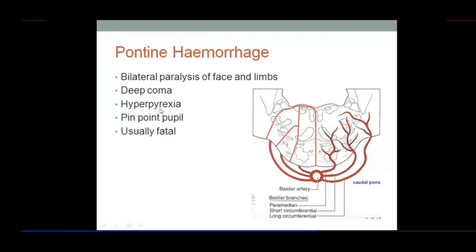Another feature is hyperpyrexia. There are temperature-regulating fibers descending from the hypothalamus. If these are cut or injured at the level of the pons, the temperature-controlling centers in the medulla become uninhibited, leading to a rapid rise in temperature called hyperpyrexia.